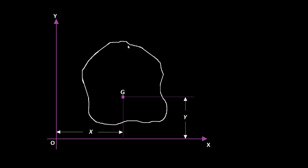In the figure shown, you have an area lying in the xy plane and the center of gravity is shown. The moment of this area about the x-axis is the area times y, which is the perpendicular distance between the x-axis and the center of gravity. The moment of this area about the y-axis is area A times x, which is the perpendicular distance between the centroid and the y-axis.